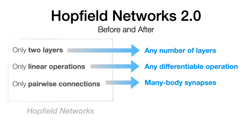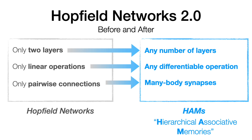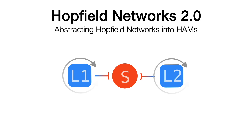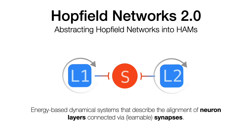On the left, with all of its perceived limitations, we have the Hopfield network, and on the right, the Hierarchical Associative Memory, or HAMS, which is what our library is built around. Fundamentally, HAMS and Hopfield networks are the same — the Hopfield network in its original formulation is a limiting case of our abstraction, where there are only two layers connected by a single dense synapse. In the end, they are both energy-based dynamical systems that describe the alignment of neuron layers connected by learnable synapses.